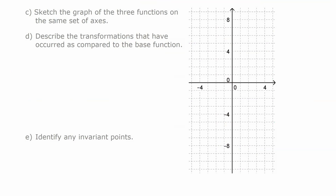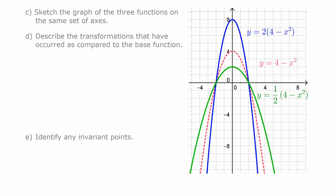Graphing the points from the tables gives us the three functions. Comparing the base function to 2f of x, all y values are doubled: the point (0, 4) becomes (0, 8); (1, 3) becomes (1, 6); (−1, 3) becomes (−1, 6); (3, −5) becomes (3, −10); and (−3, −5) becomes (−3, −10). All y values have been doubled.